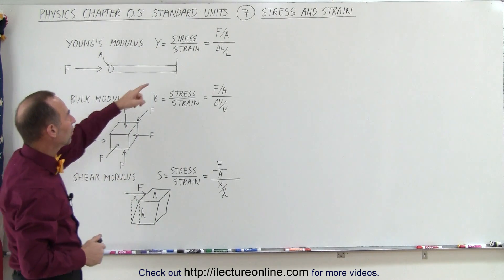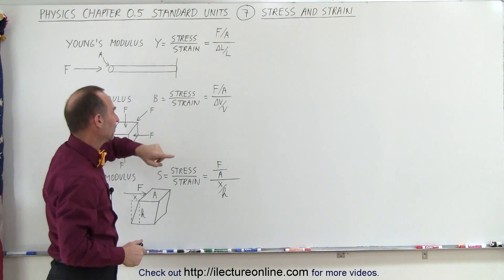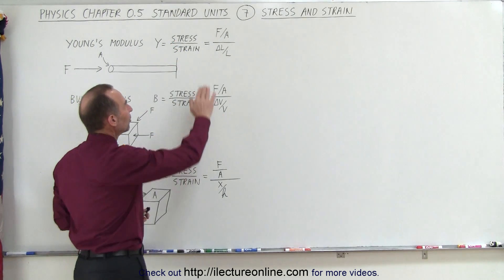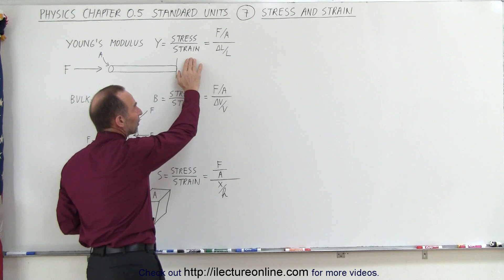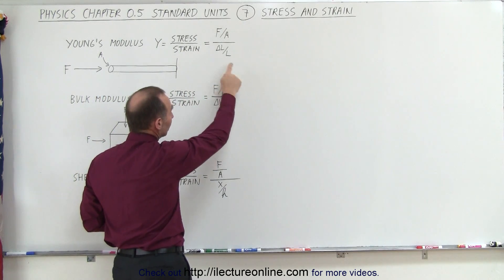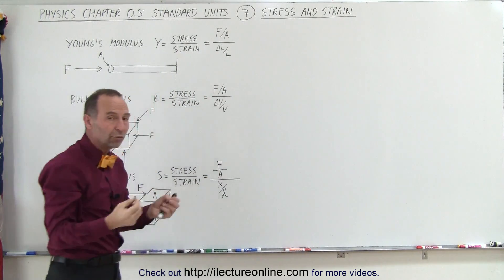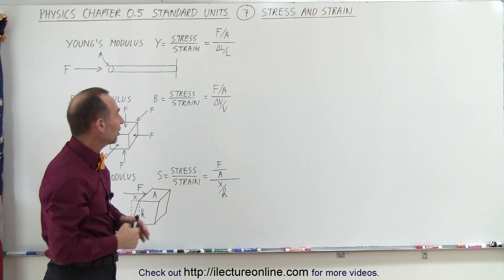In each case, it's a ratio of the stress divided by the strain. Notice that the units in the denominator for strain are non-existent because they cancel out. We have ΔL divided by L, and since both of them are units of length, they cancel out.